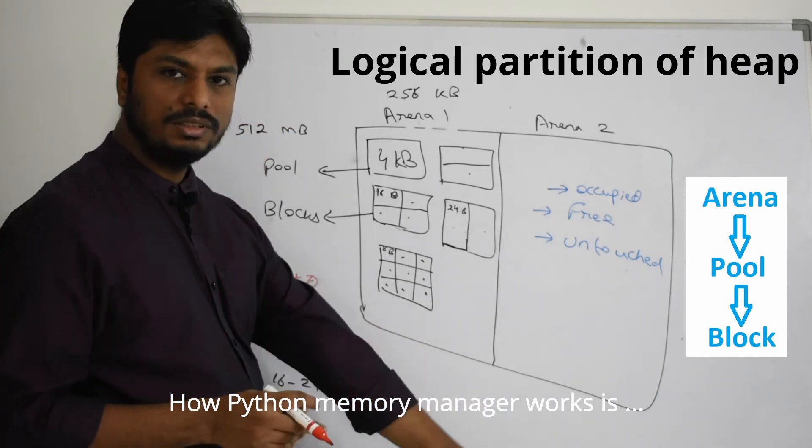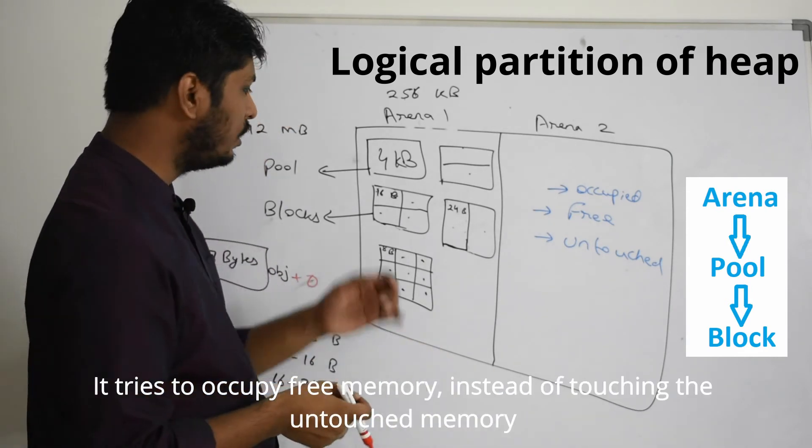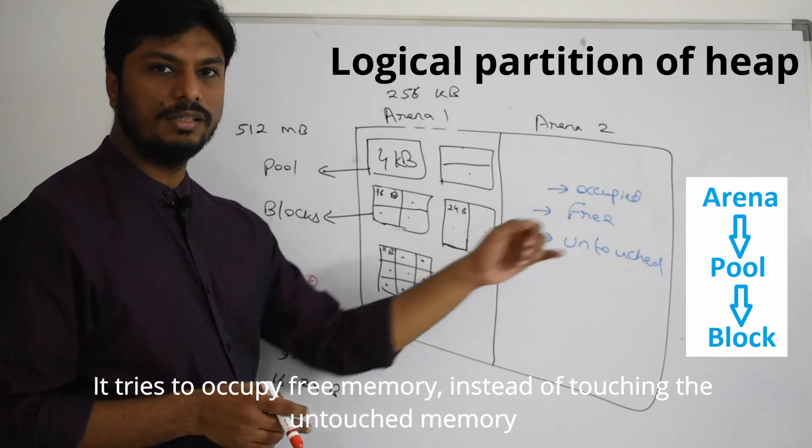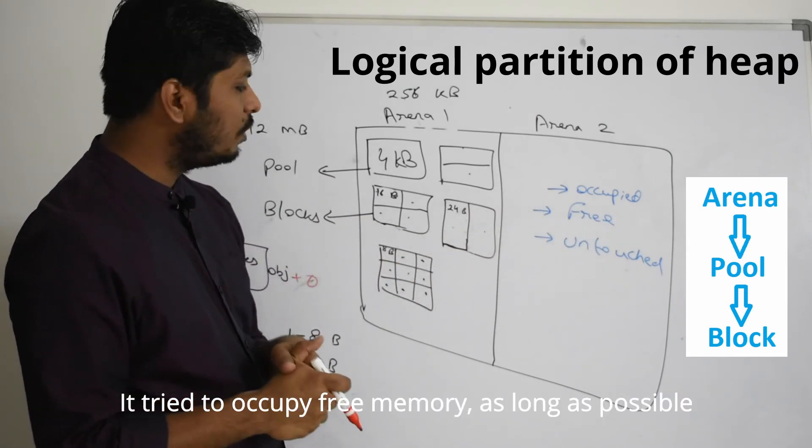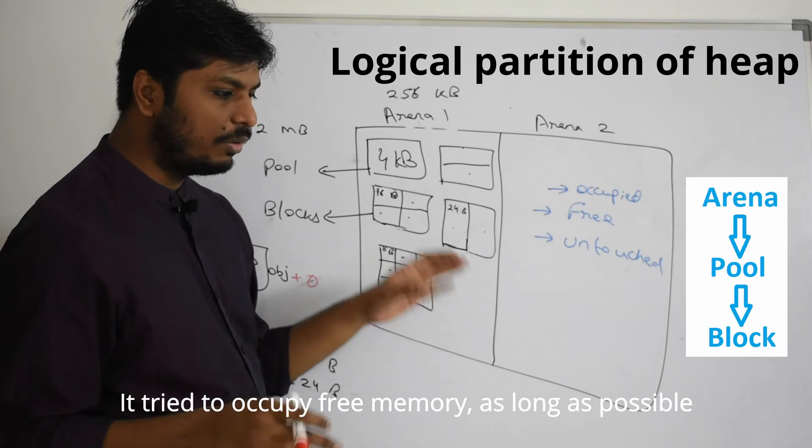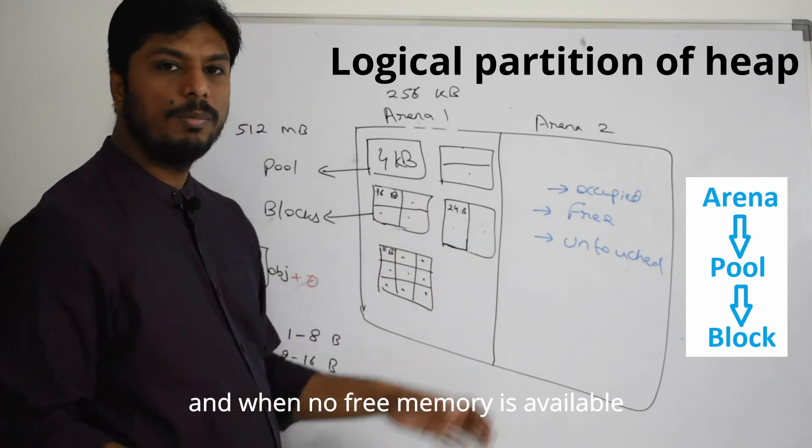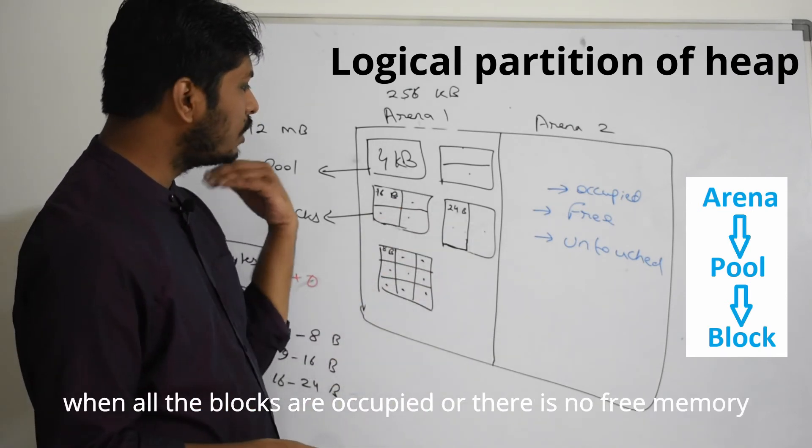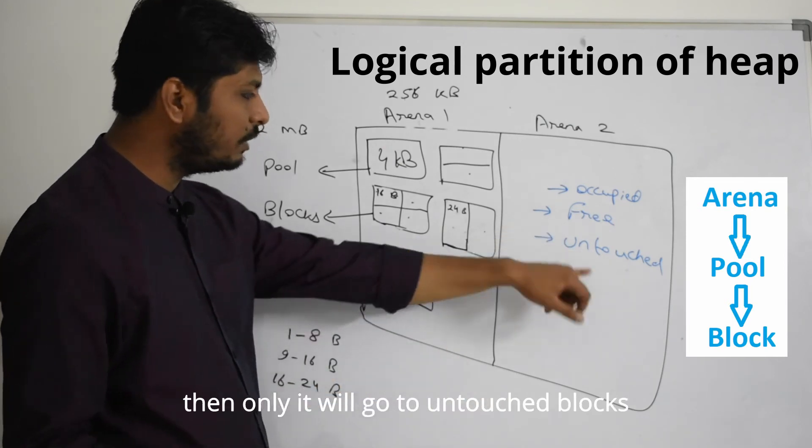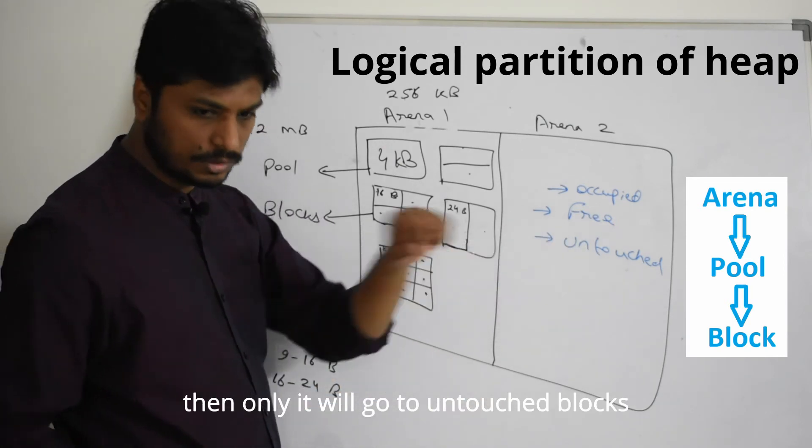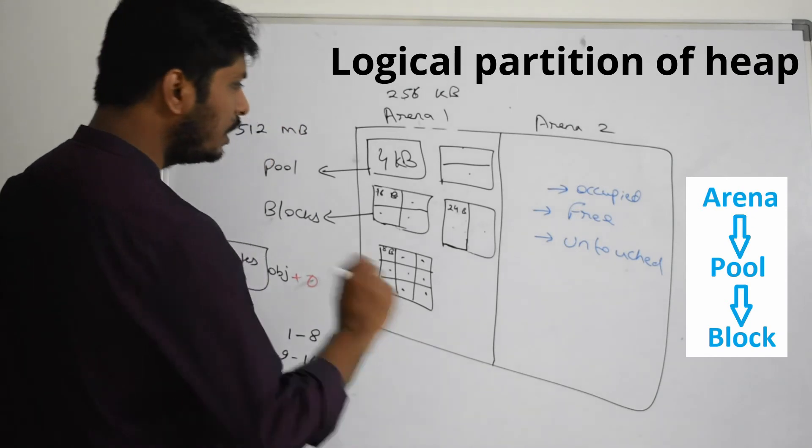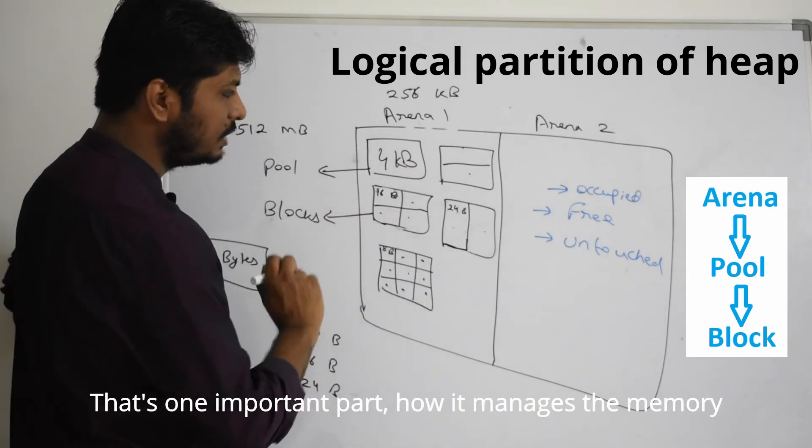How Python manager works is, it tries to occupy free memory instead of touching the untouched memory. It tries to occupy as long as possible only the free memory. And when no free memory is available, when all blocks are either occupied or there is no free memory, then only it will go to untouched blocks.